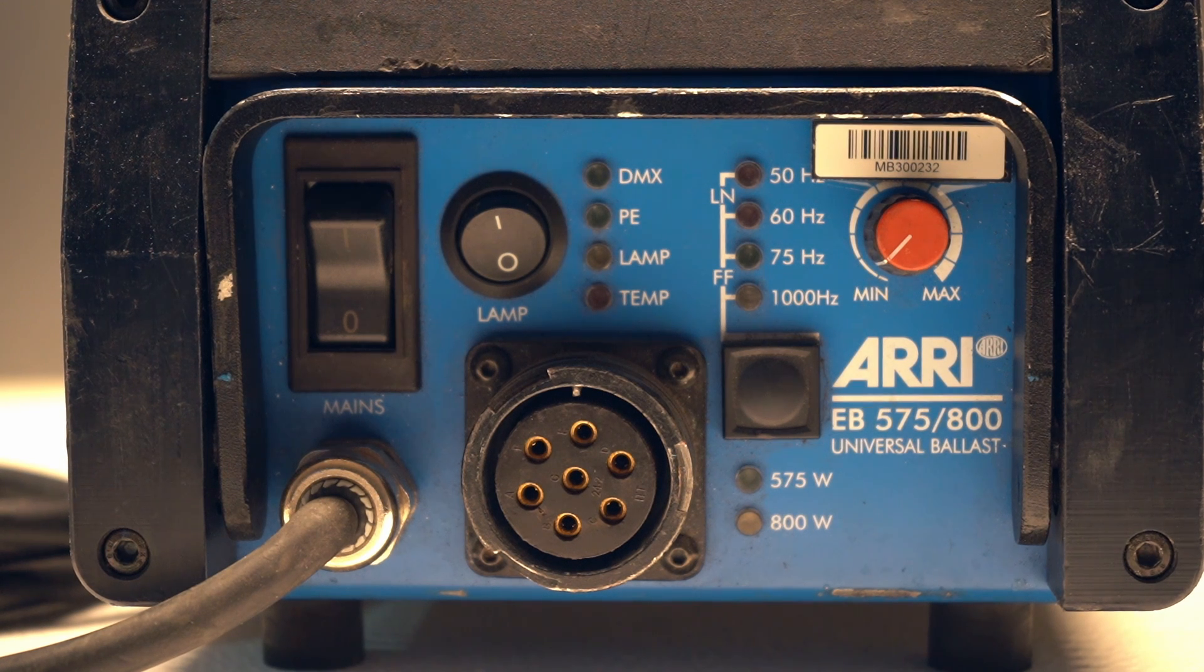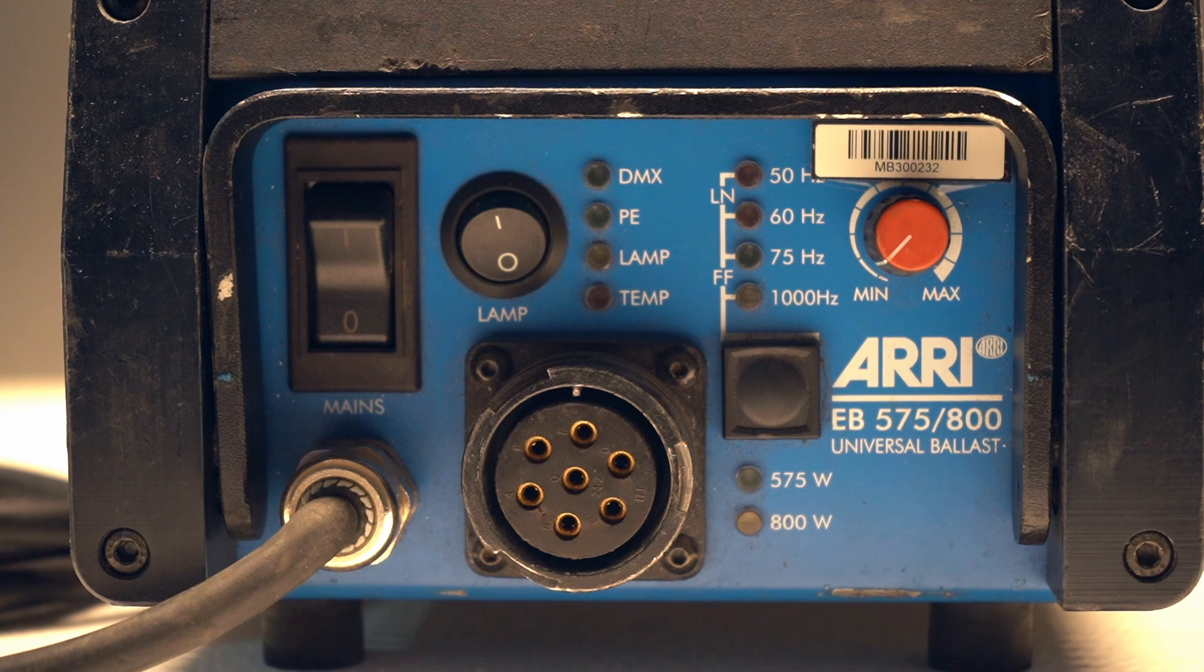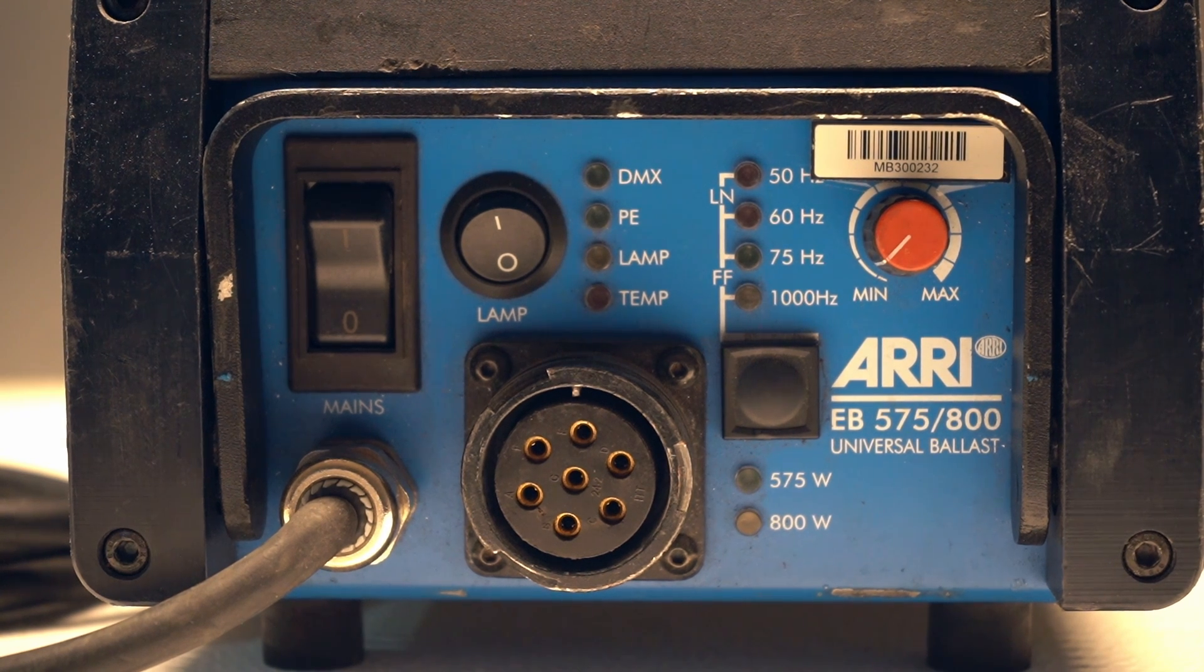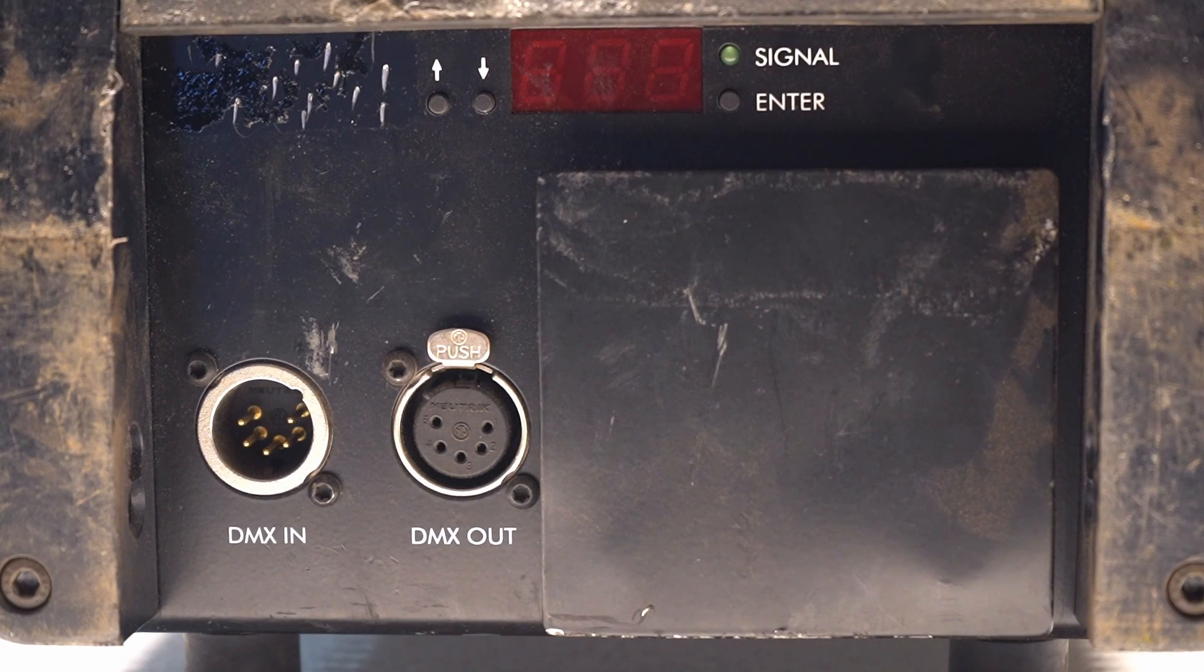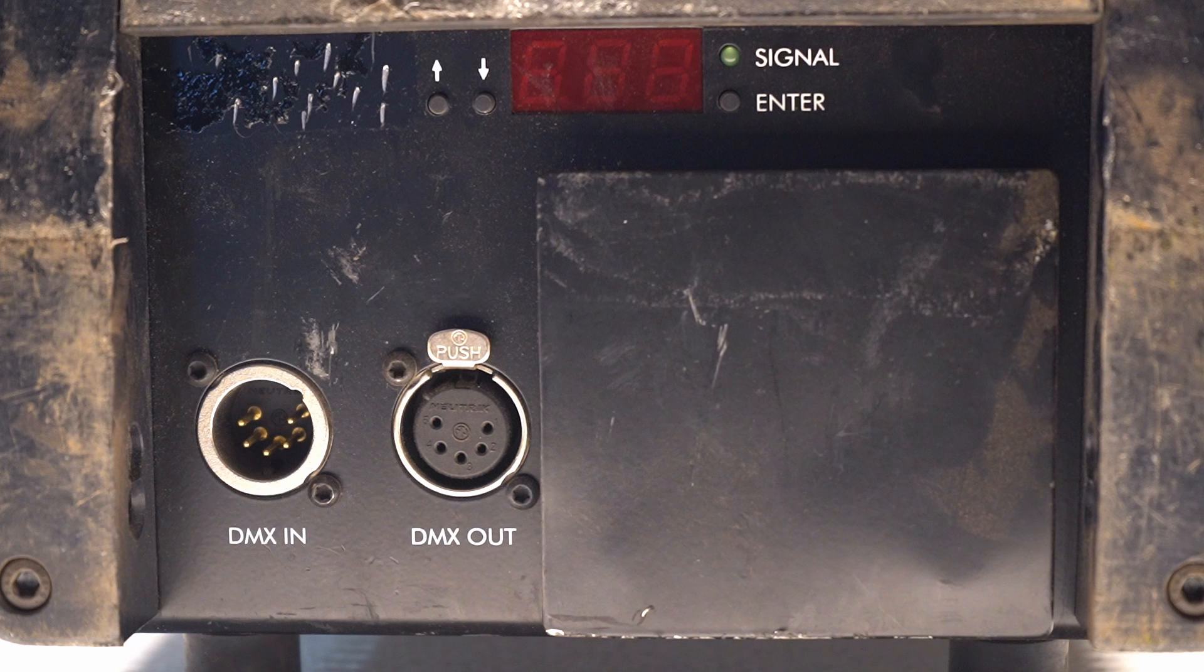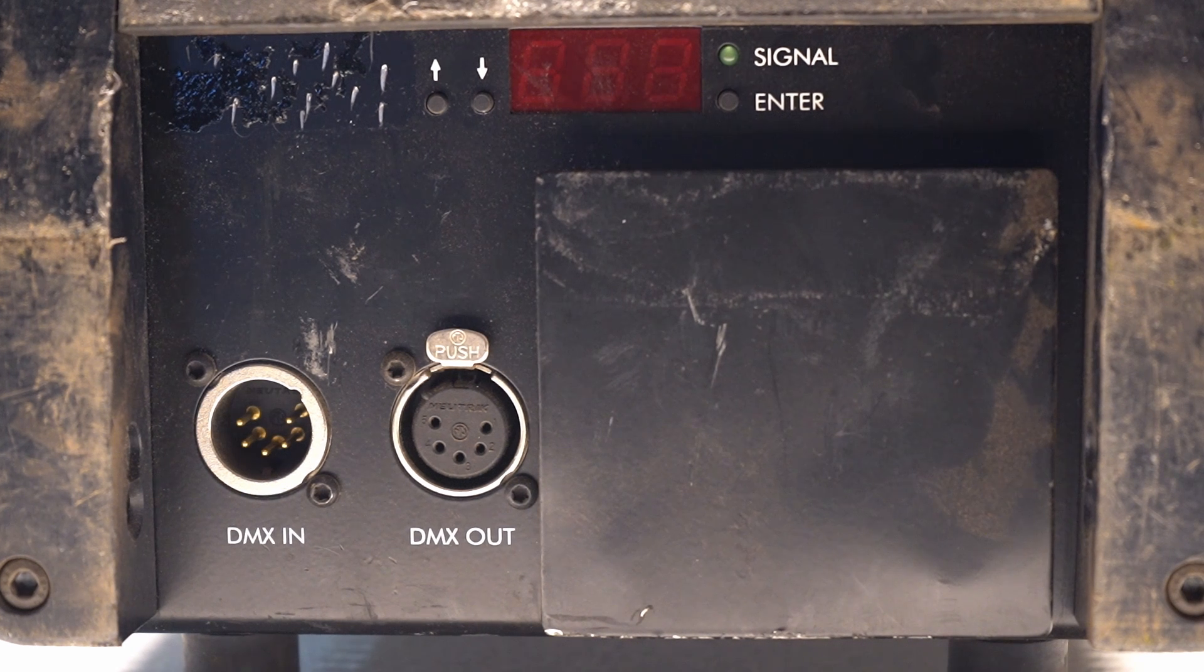If you're not using DMX or wired control you'll see the PE, lamp, and temperature LEDs on. That means the light is up to temperature and is fully operational. The wattage indicator just lets you know what kind of bulb you put in the light. And if you do want DMX control, there's a DMX input and output and a DMX display in the back of the ballast.